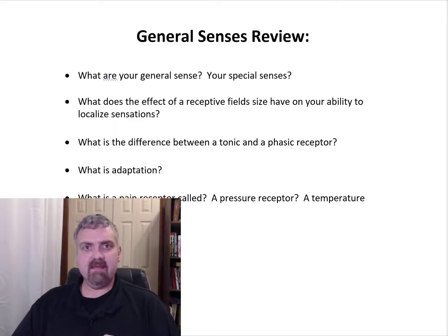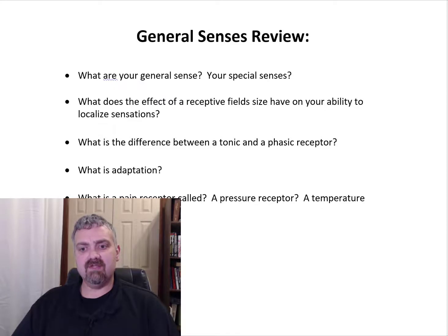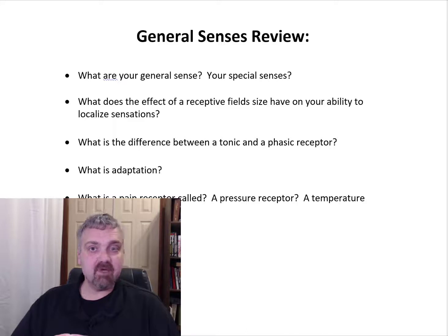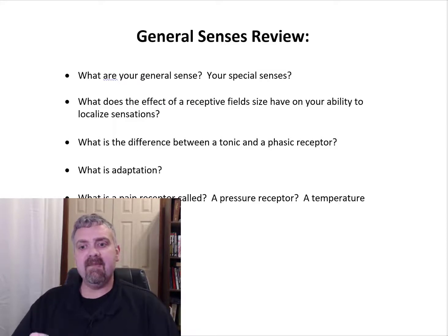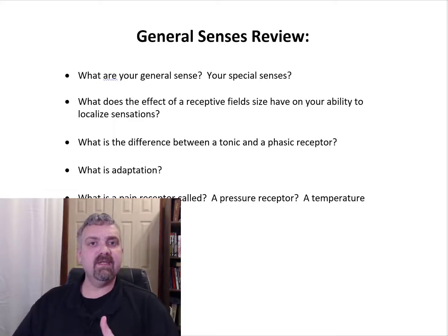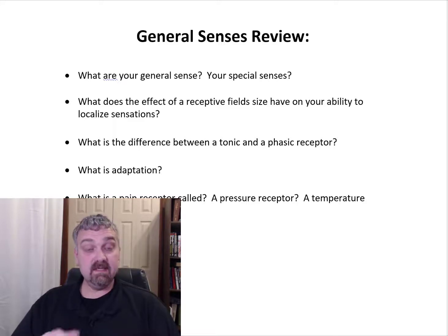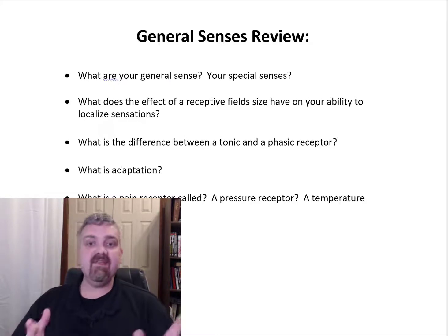All the rest of them — pain, touch, proprioception, vibration — all these types of things are examples of general senses. The one that probably confuses people the most is proprioception. I like to call your proprioceptors your joint position awareness receptors, which you'll see here at the bottom. That is a general sense though. Just remember your special senses — usually covered in a completely separate chapter in anatomy classes — are vision, taste, smell, hearing, and equilibrium or balance. Anything else falls under the general sense category.